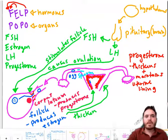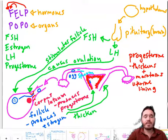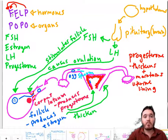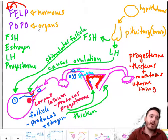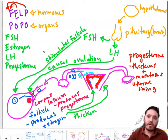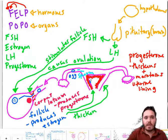Hello everybody, so we're continuing hormones, homeostasis, and reproduction with subtopic 6.6. Last time I left off with Felp Hopo. We talked about what happens if there is a fertilized egg implanted in the uterine lining, and we talked about what happens if there isn't an embryo or a fertilized egg developing in the uterine lining.